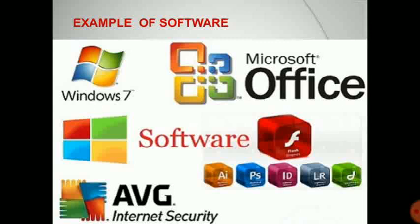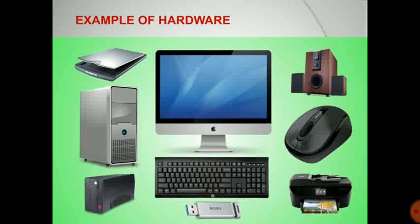Hardware is the collection of all the parts that you can physically touch. Whatever hardware is there, you can touch it, you can see it. In short, hardware is the physical parts that we can touch and see. Examples of hardware are: monitor, keyboard, CPU, scanner, UPS, mouse, printer, and pen drive. These are hardware that you can touch and see.